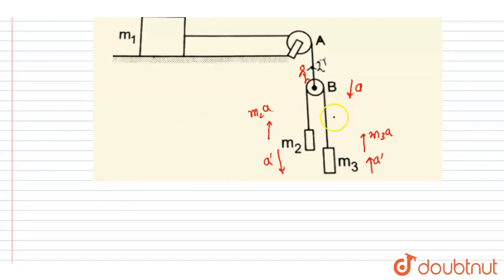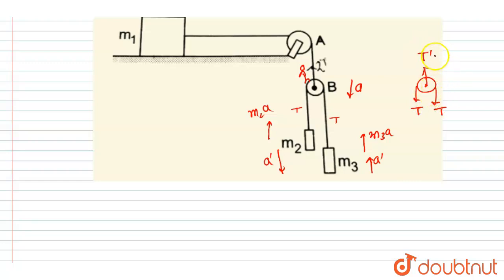The tension in the lower string is t and t. Since this pulley is massless, the tension in the upper string will be 2t — you can see that since the pulley is massless, this is t and this is t, so the upper tension is t'. The net force on the pulley should be zero, so t' equals 2t.